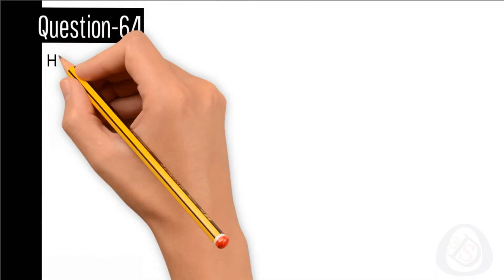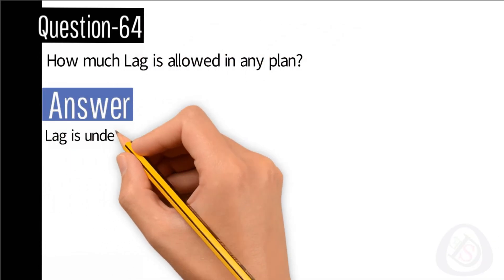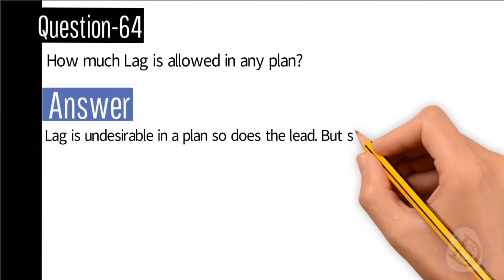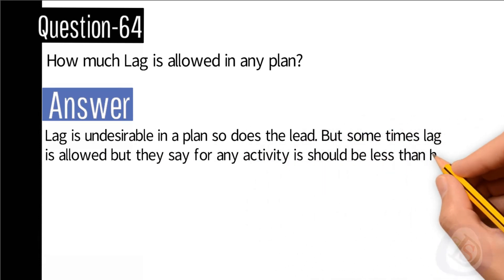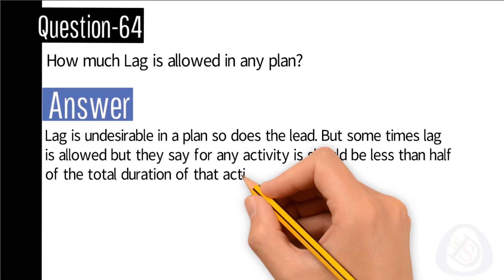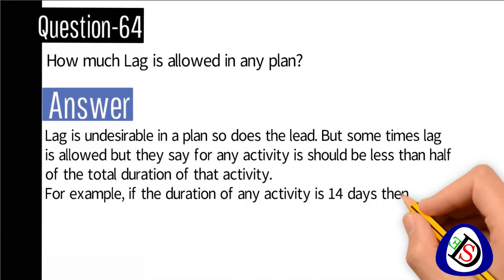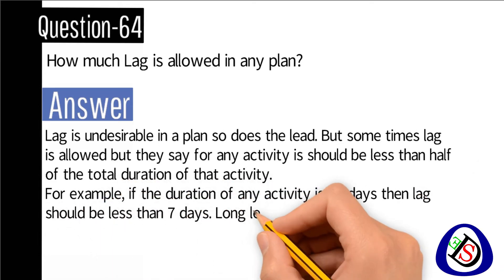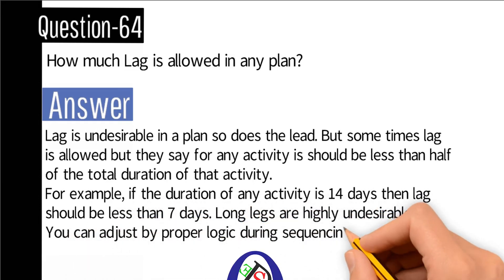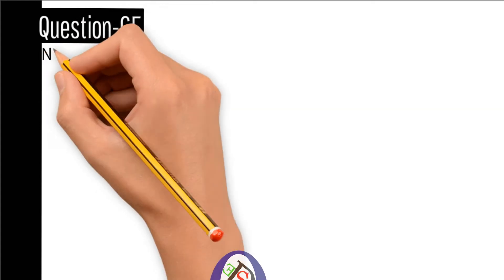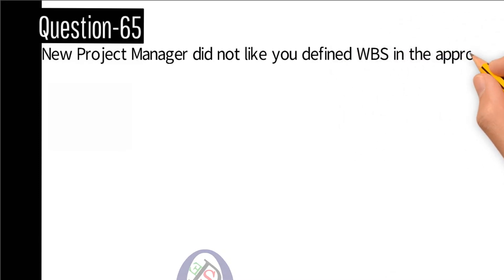Question number 64: How much lag is allowed in any plan? Answer: Lag is undesirable in a plan, as is lead, but sometimes lag is necessary. The rule is that for any activity, lag should be less than half of the total duration of that activity. For example, if an activity duration is 14 days, the lag should be less than 7 days. Long lags are undesirable and can be adjusted by proper logic during sequencing.